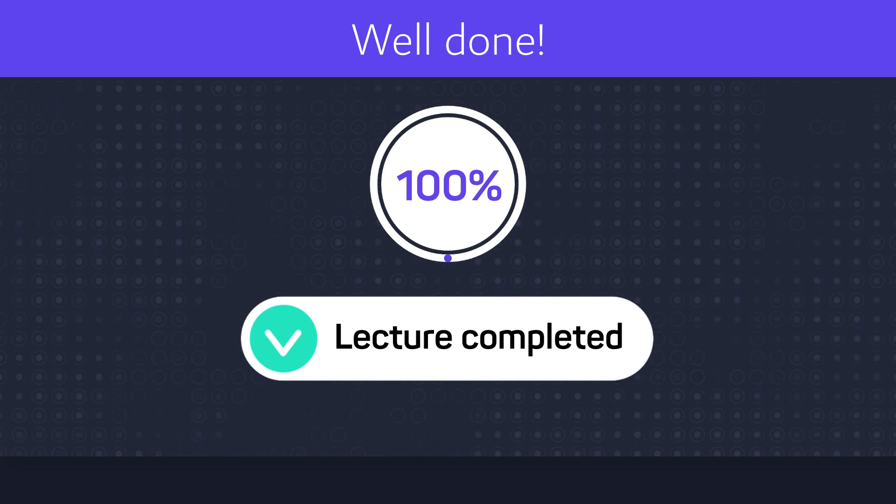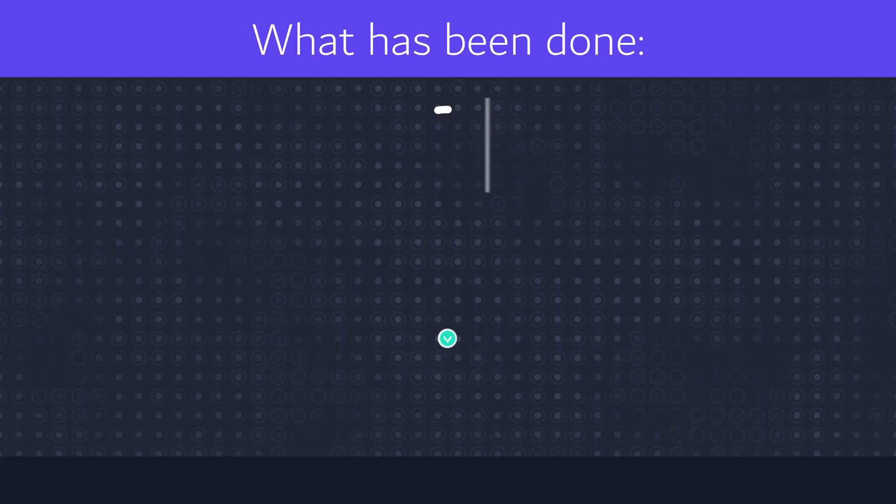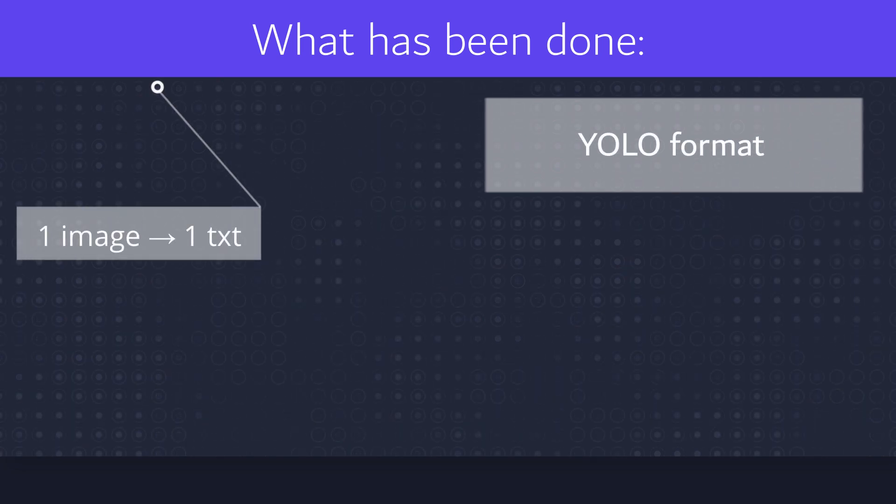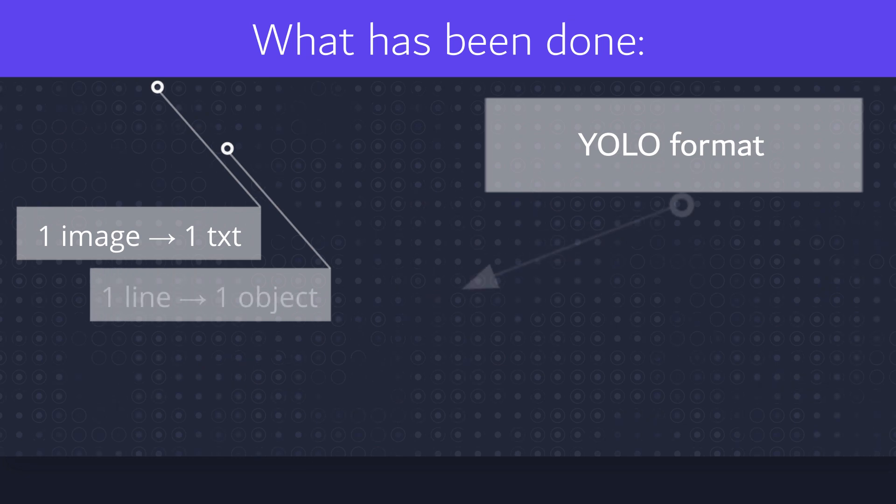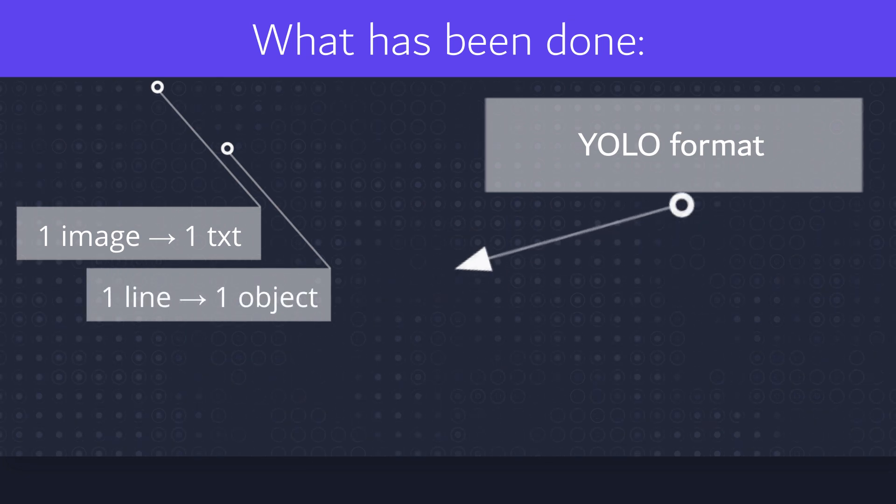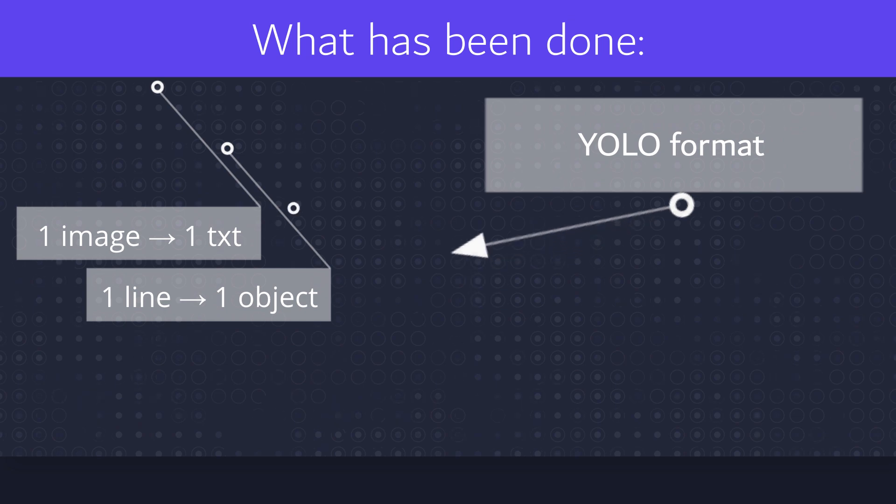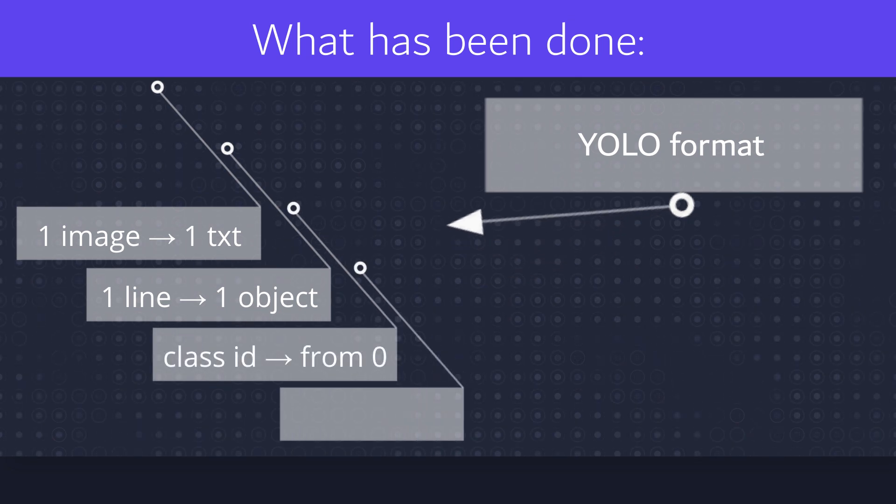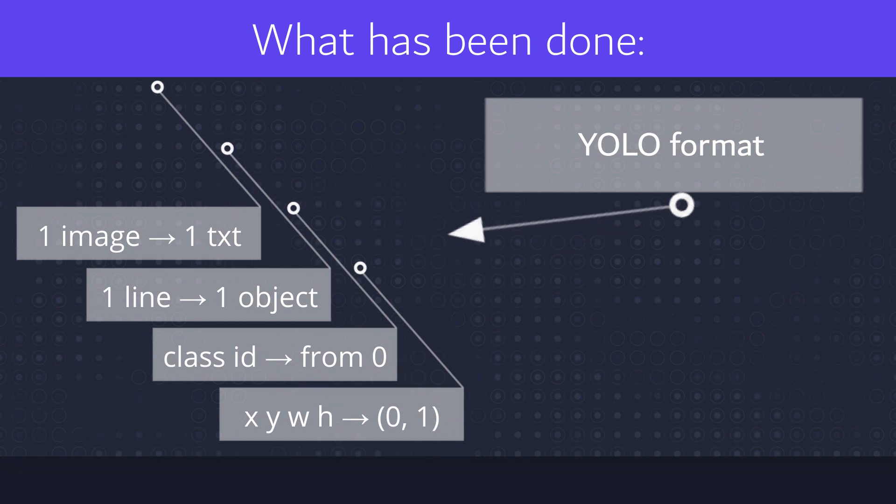In this lecture you obtained new skills. You are able now to explain what YOLO format is. Every single image has its own single annotation txt file. Every line inside annotation txt file describes one object on the image. Class index starts from 0 and coordinates of the bounding boxes are normalized from 0 to 1.